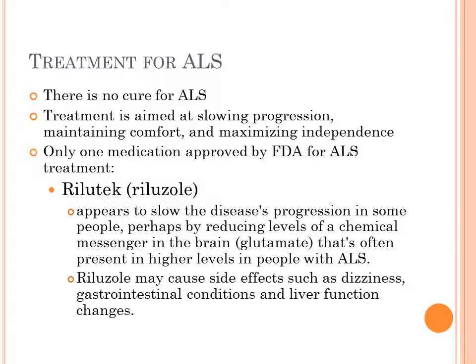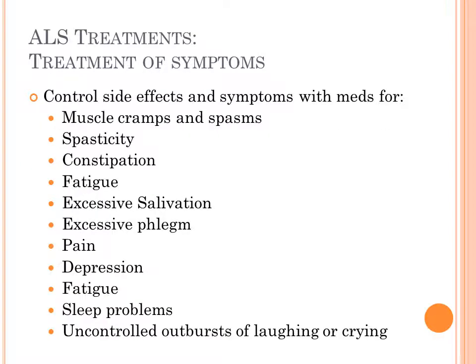Riluzole may cause some side effects including dizziness and liver function changes, so you have to really balance the side effects with possible improvement in muscle control. Since we can't cure the underlying disease, we're going to treat a lot of symptoms, and this is where multiple medications come in. For muscle spasms and spasticity, you may have a muscle relaxant. For constipation, things like Colace and senna, plus dietary and fluid changes. For excessive fatigue, you may find patients on a stimulant to keep them awake during the daytime.